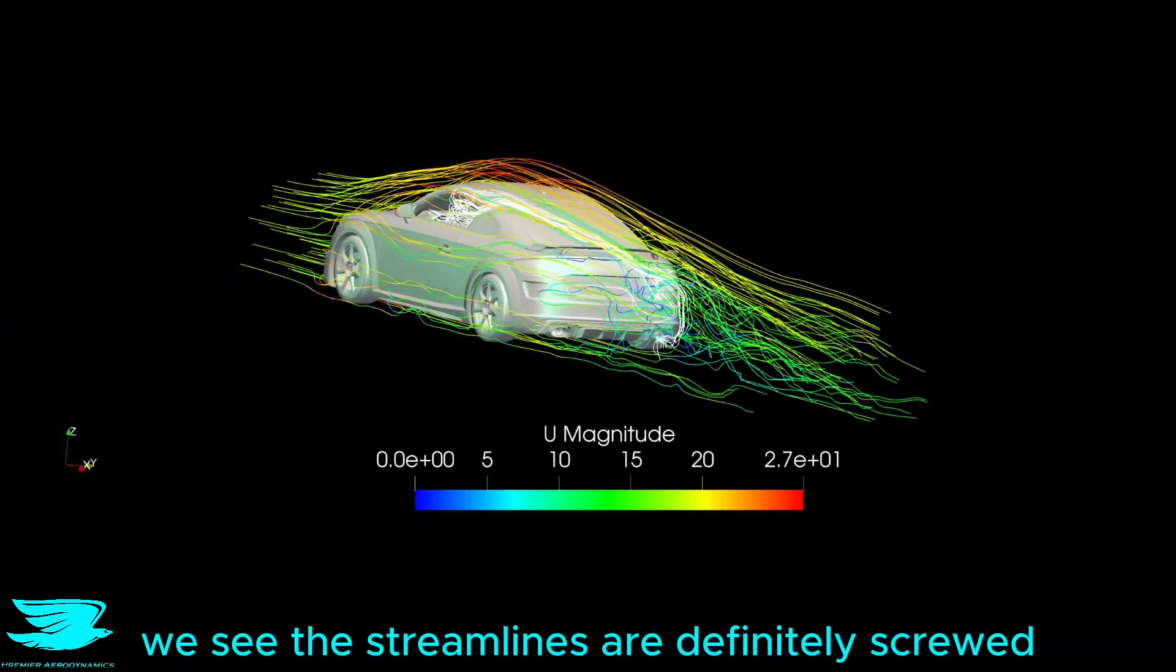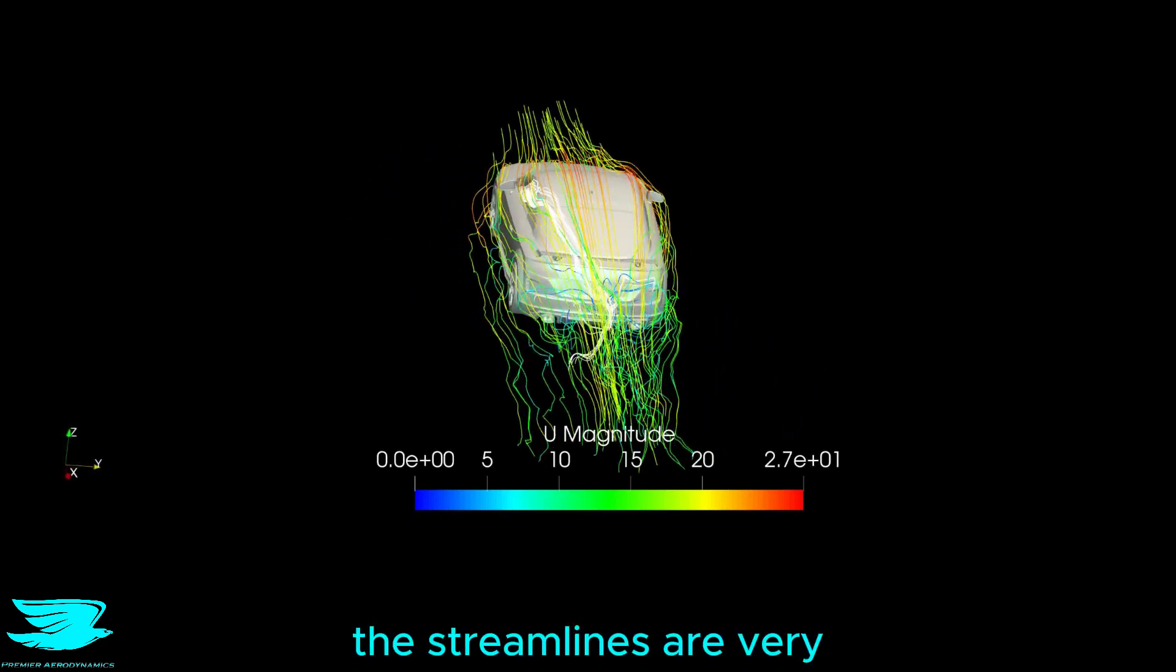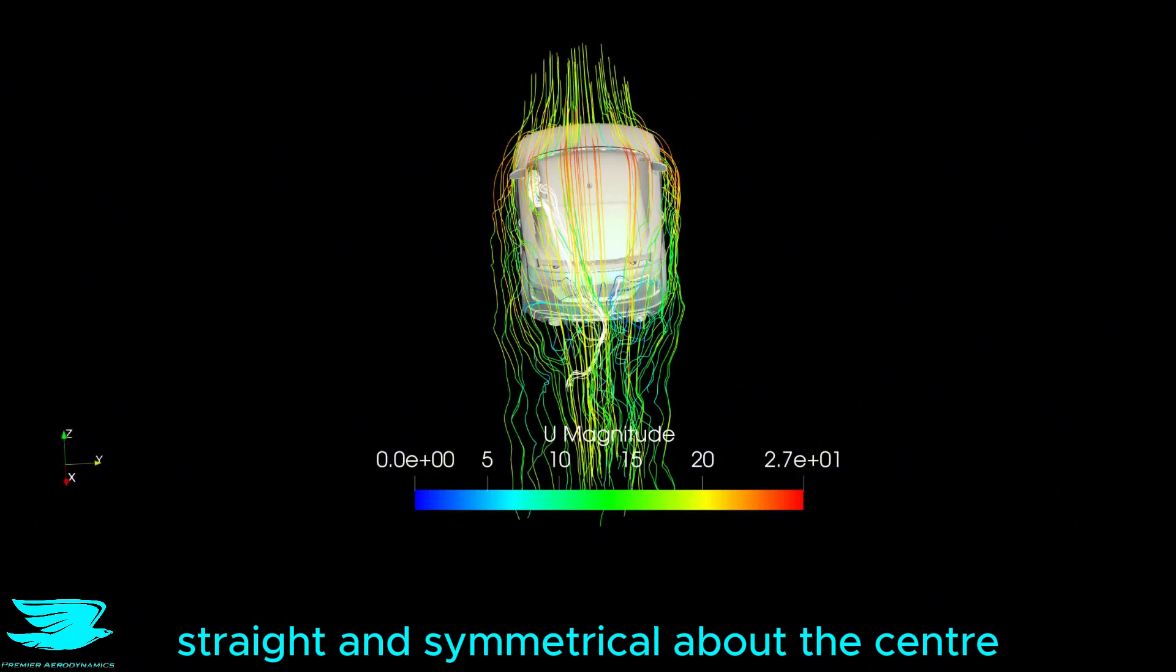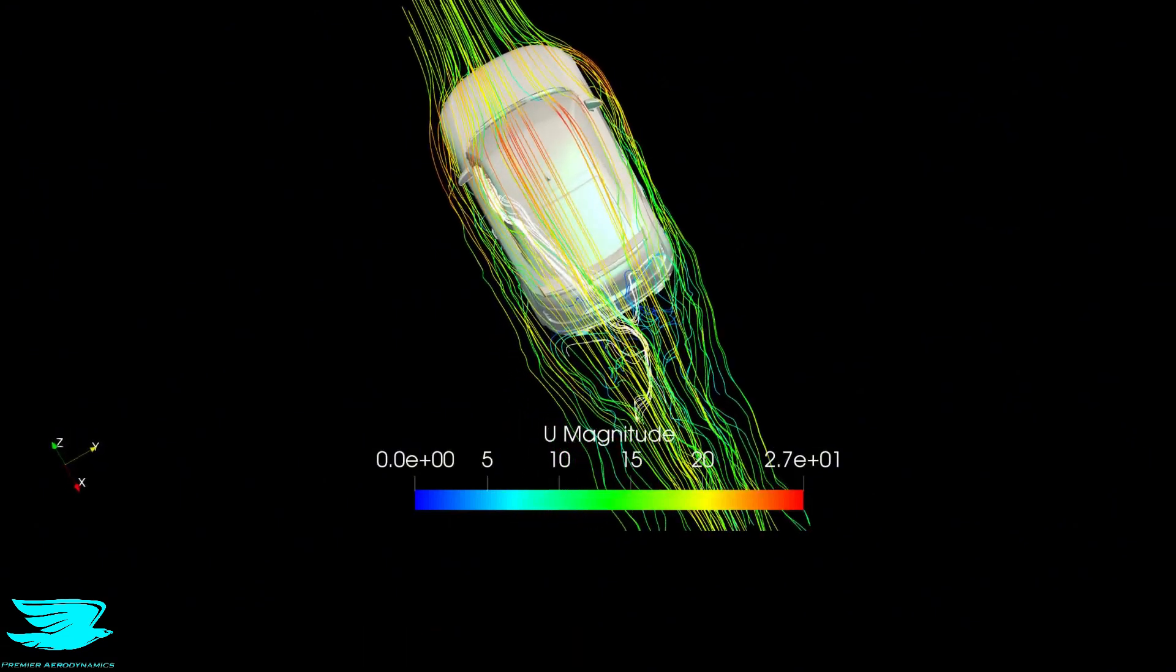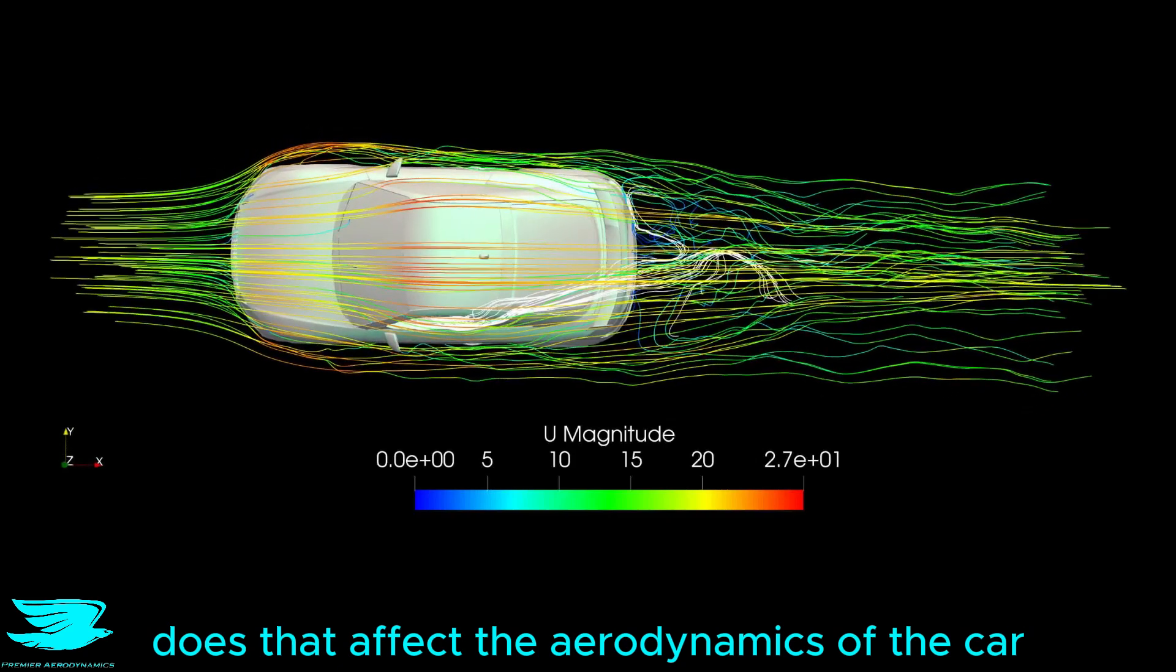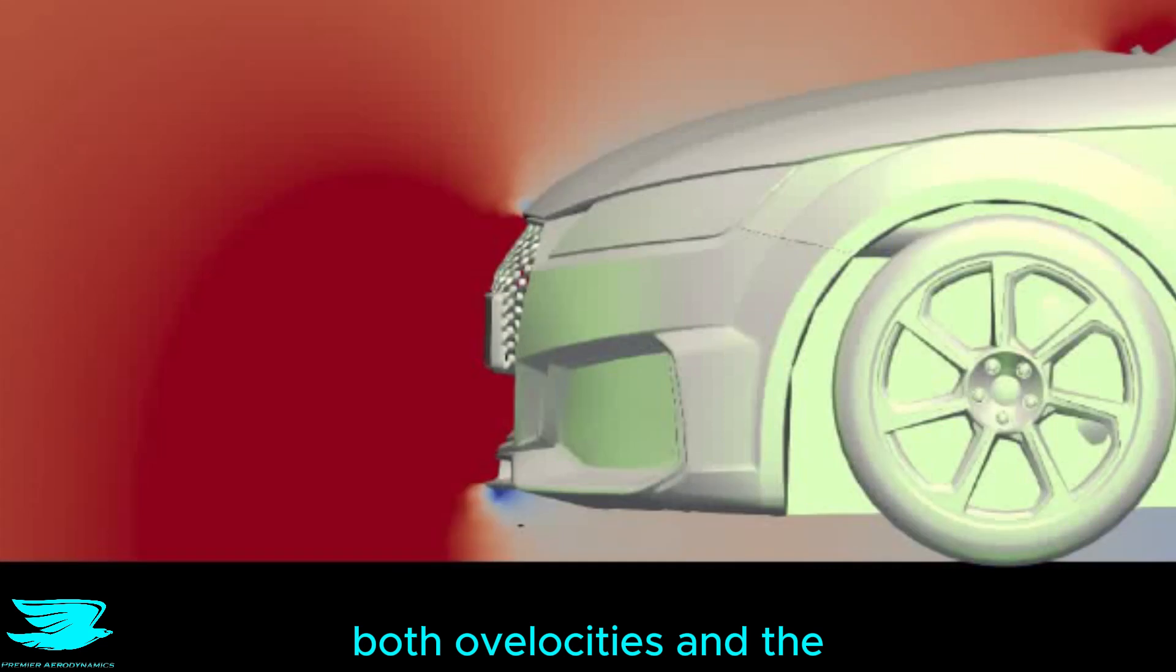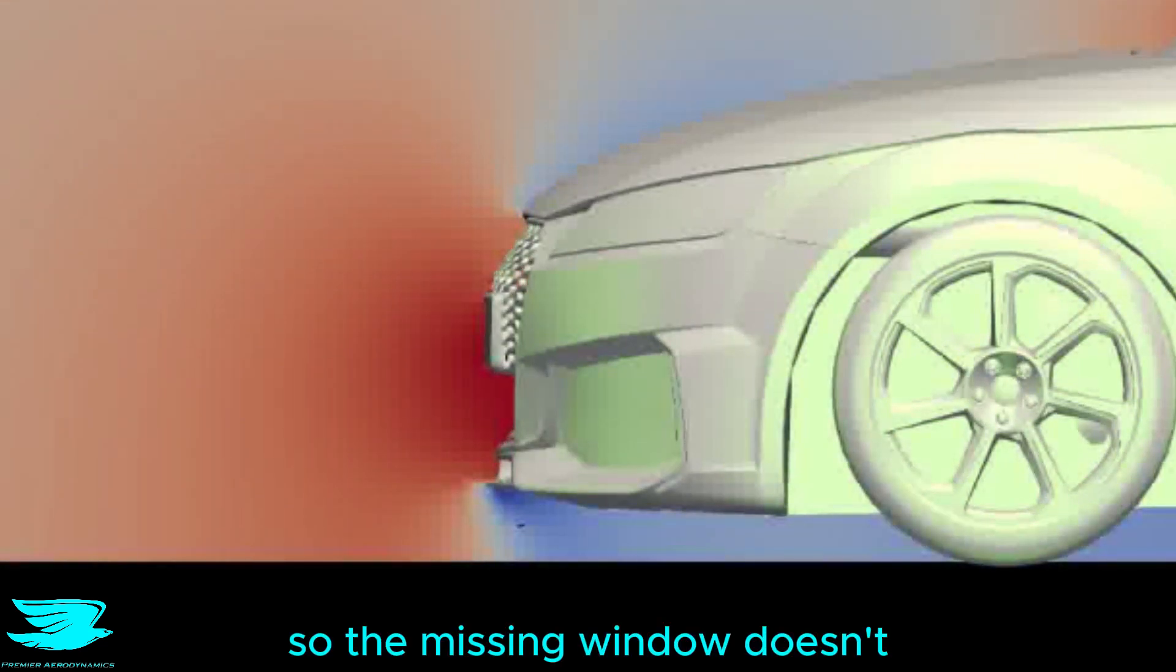But looking from on top, we see the streamlines are definitely skewed now. For the undamaged TT, the streamlines are very straight and symmetrical about the center. But for the damaged TT, they are definitely tilted towards the driver's side. Does that affect the aerodynamics of the car? The front of the car is very similar. Both the velocities and the pressures are the same. So the missing window doesn't affect upstream very much. That's good.